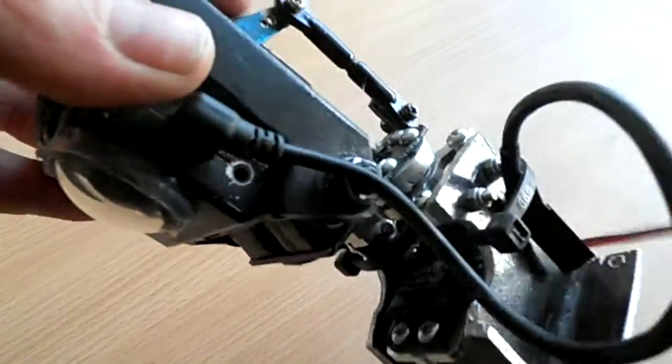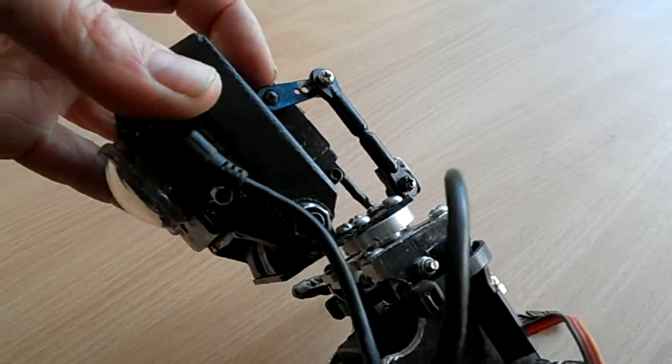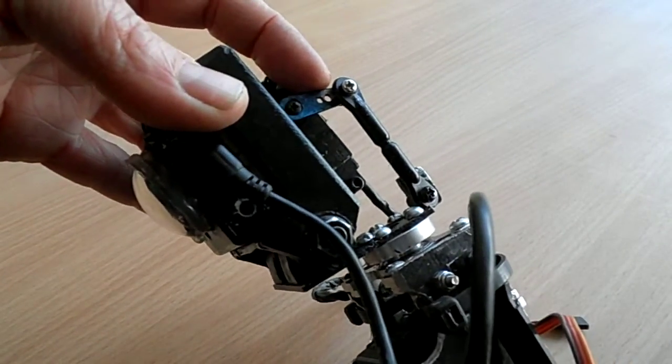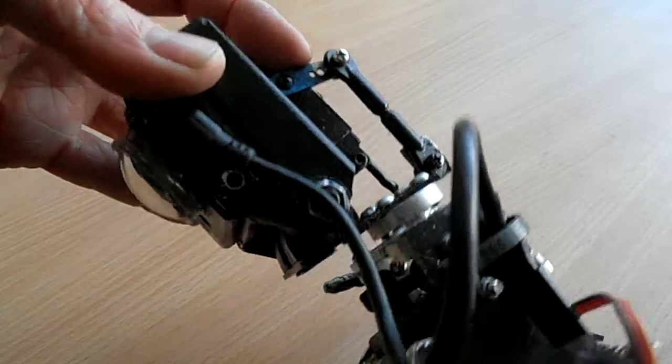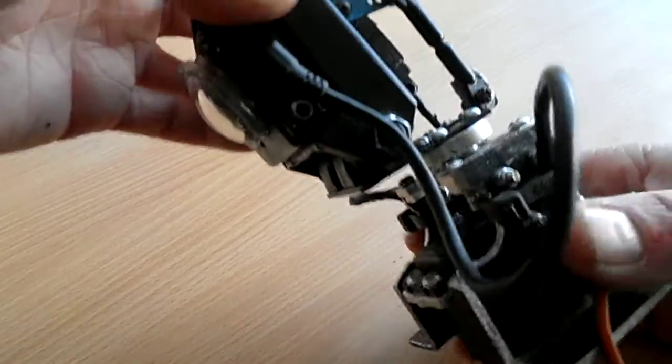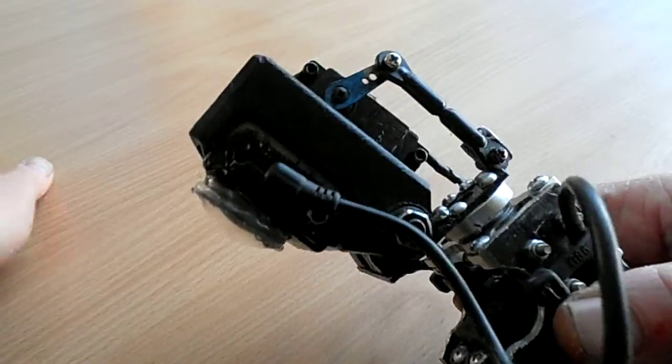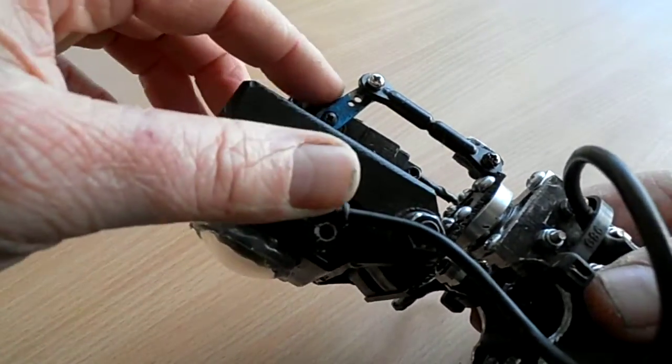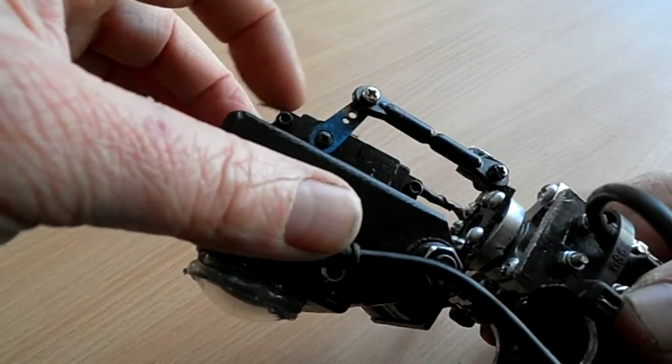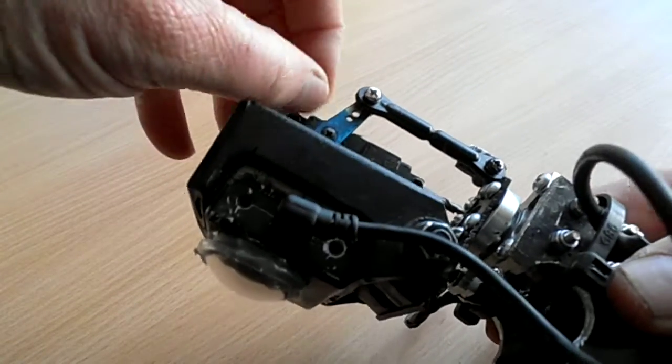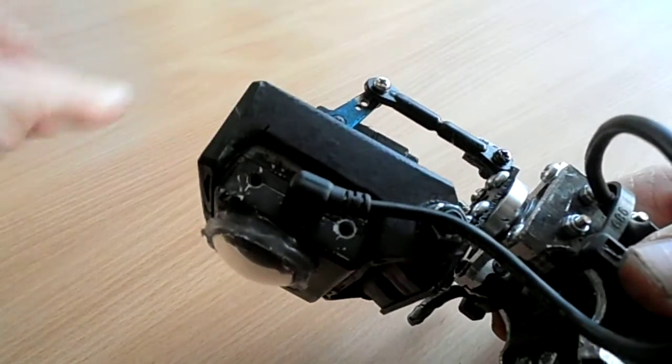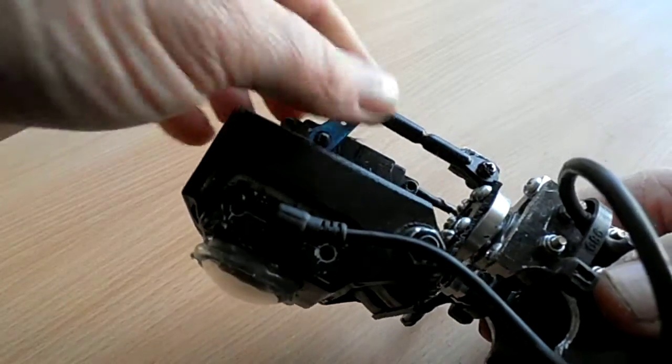And this is a Hi-Tech servo, a Hi-Tech HS325HB, which seems to be pretty good actually. I think the main thing you've got to look for in this servo is, if you're using a gyro, you need something with fairly good speed. And this one seems pretty good like that.